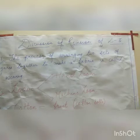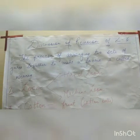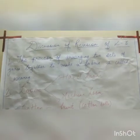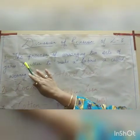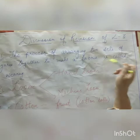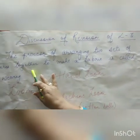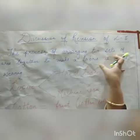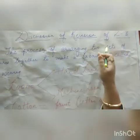Let's check the first answer. The first question was: what is weaving? The answer is: the process of arranging two sets of yarns together to make a fabric is called weaving. In case you could not answer the question, write it from the answer I have given.